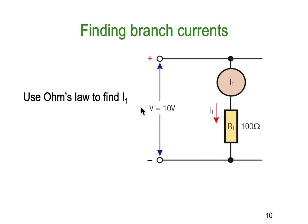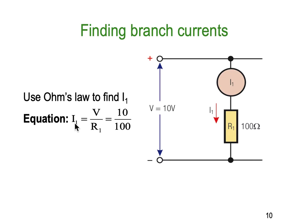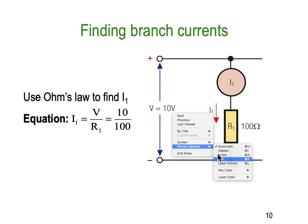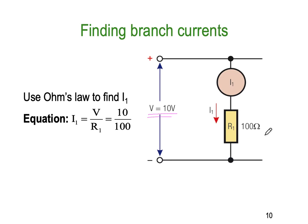To find the branch current, we use Ohm's law: I = V/R, where V is the applied voltage — the same throughout the entire circuit. So I equals the applied voltage divided by R1, or whichever resistor you want to measure. In this case: 10 volts divided by 100 ohms equals one-tenth of an amp, or 0.1 amps, or 100 milliamps — all equivalent expressions.